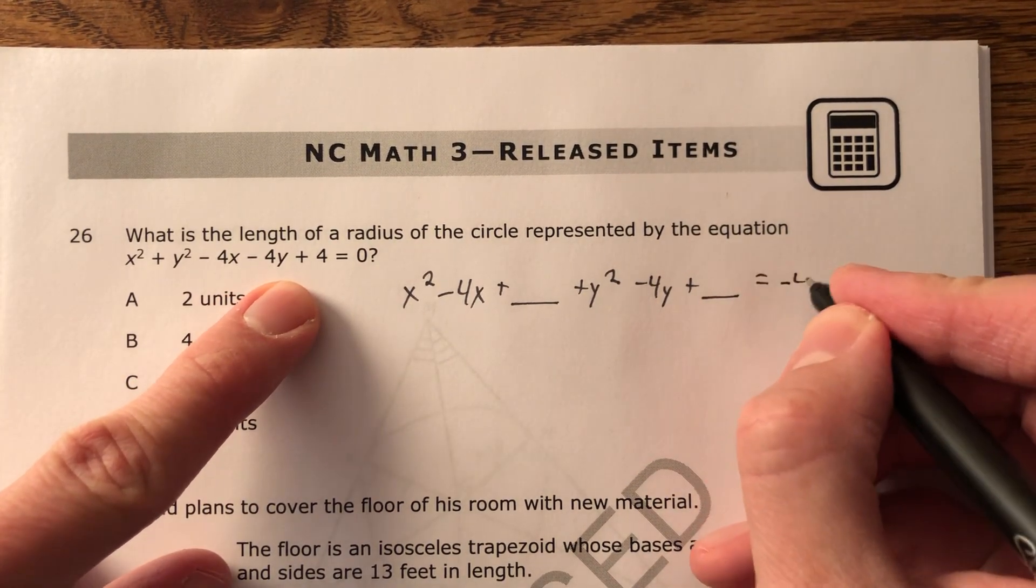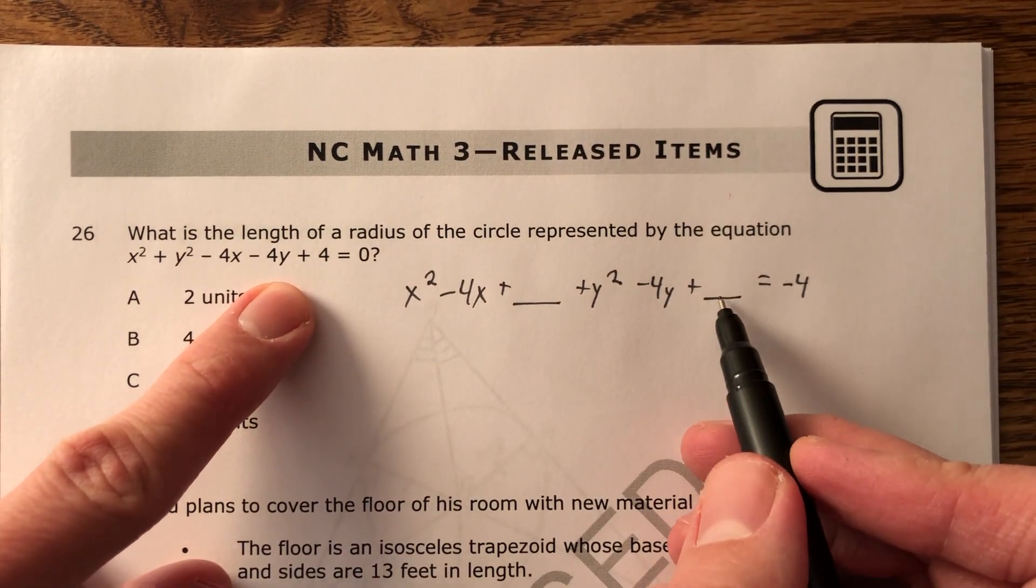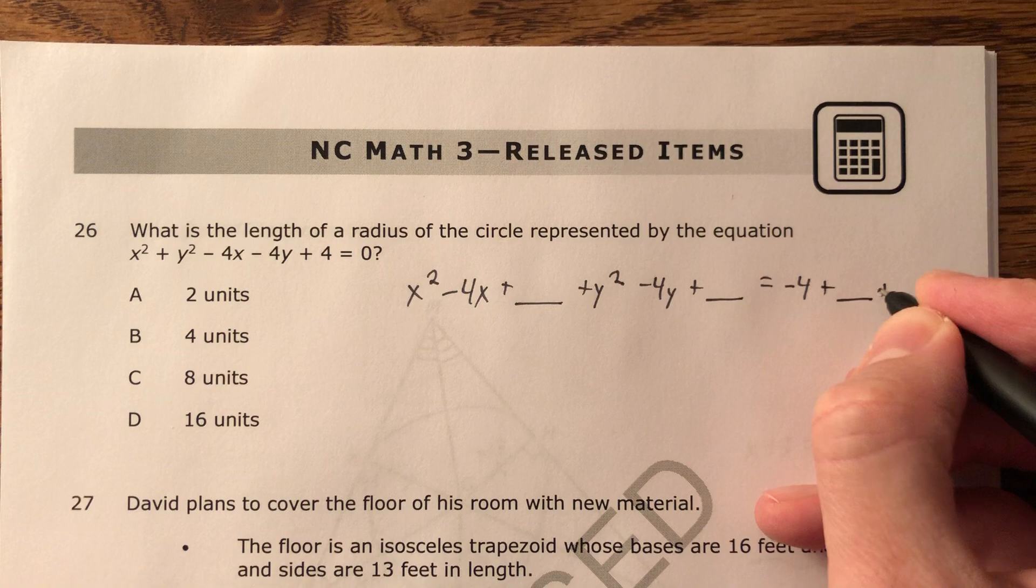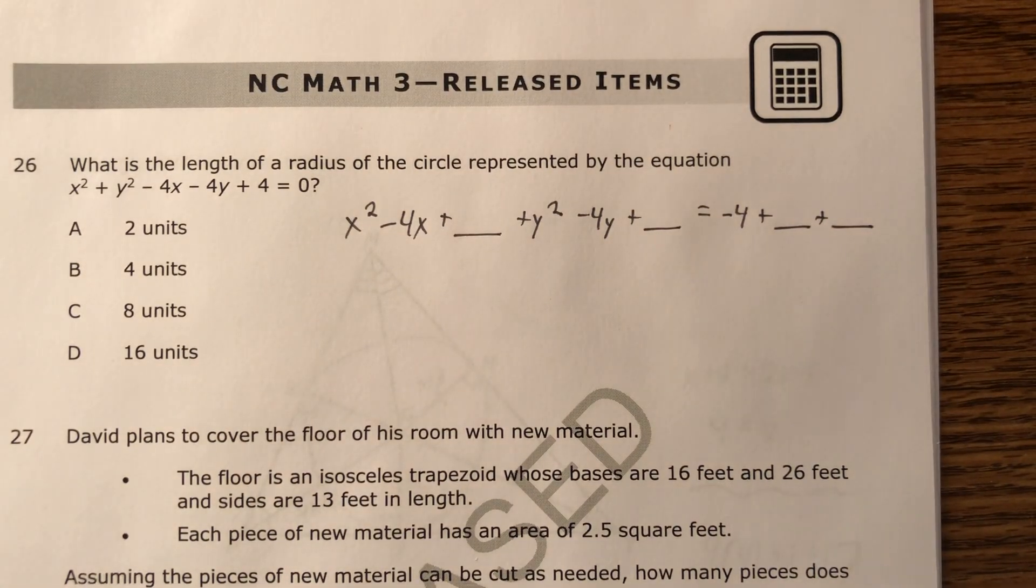And then equals negative 4. I moved this 4 over. Technically this is going to be a 4. I could have left the 4 there, but just out of habit and the fact that it doesn't always work, I didn't do that.